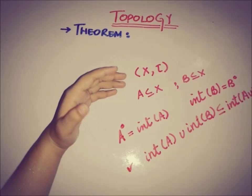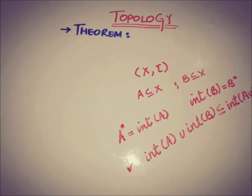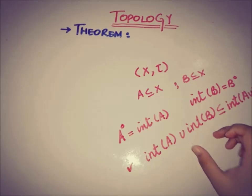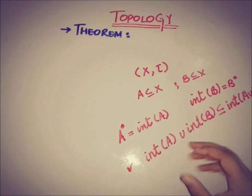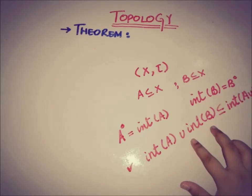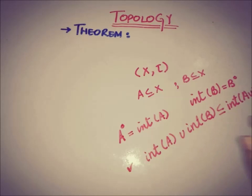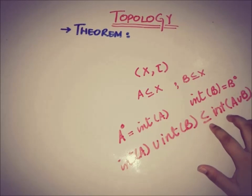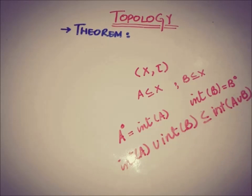If X and tau is a topological space and there are two subsets of X, A and B, then taking a union of the interior of A and interior of B is a subset of the interior of A union B — that is, the interior of (A∪B).